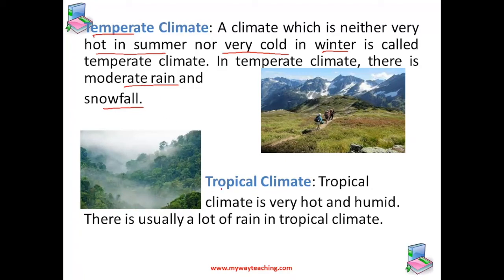Next, we come to tropical climate. A climate having very high temperatures and high humidity is called tropical climate. Thus, a tropical climate is very hot and humid, and there is usually a lot of rain in the tropical climate.